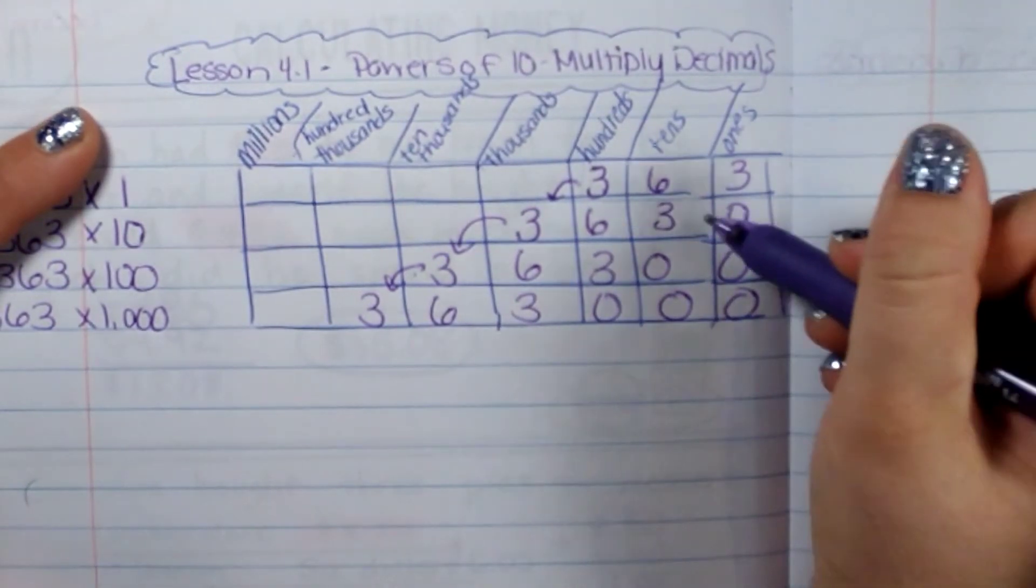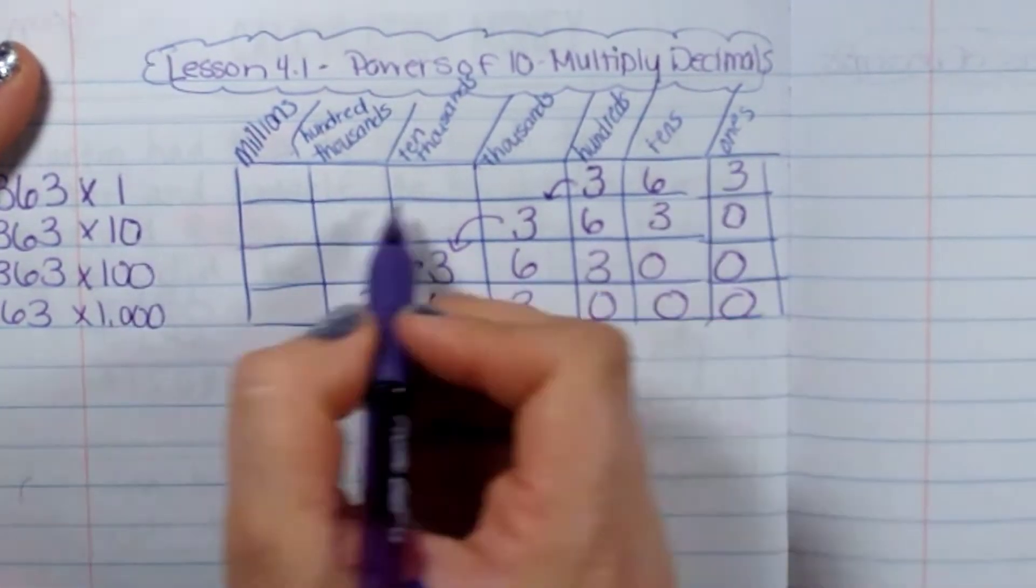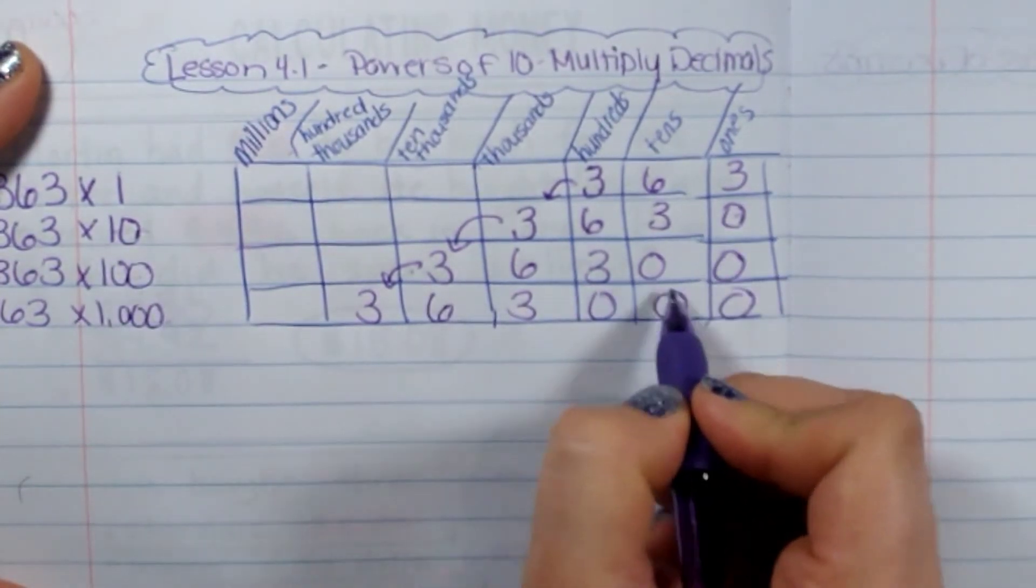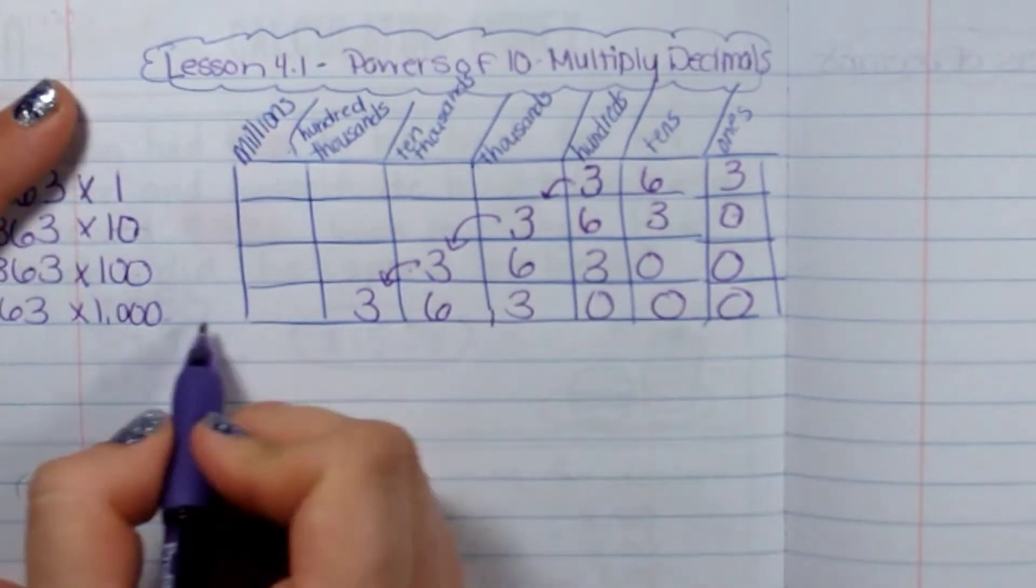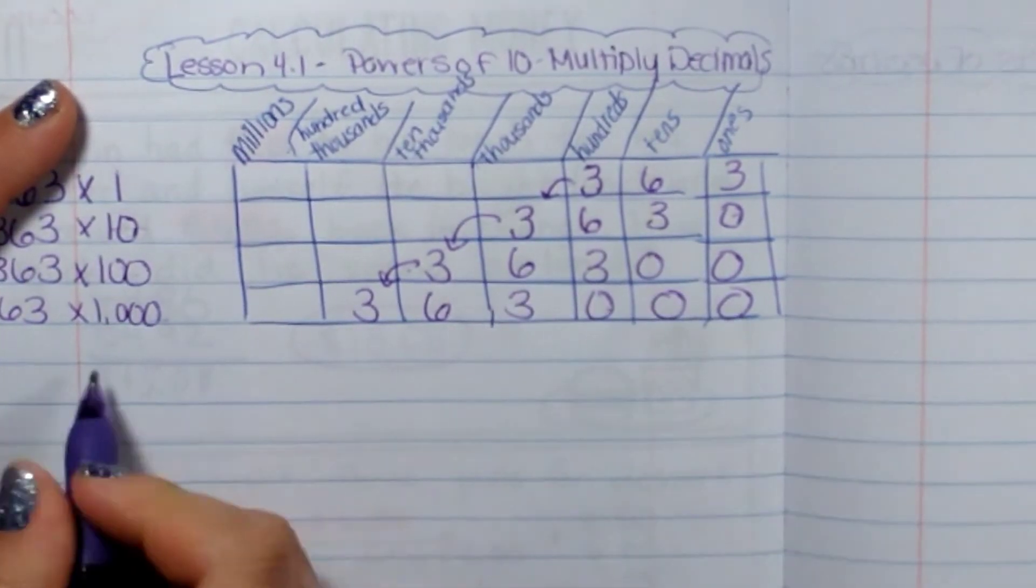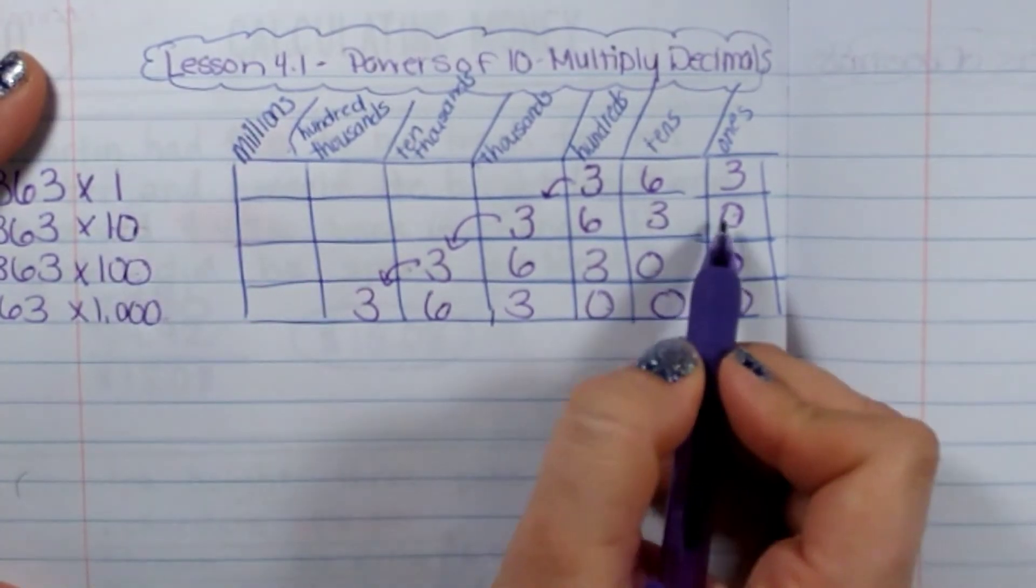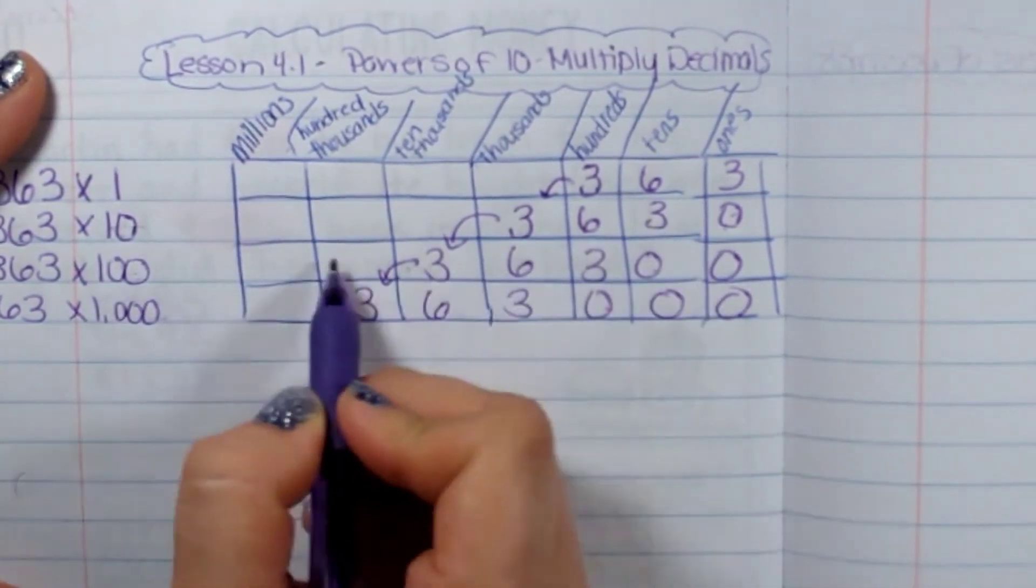So what I'm doing is each time I multiply by ten, one hundred, one thousand, I'm adding another zero in the place. You can see one thousand, there's three zeros. One hundred, there's two zeros. Ten, there's one zero. And we keep moving further and further to the left.